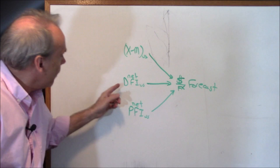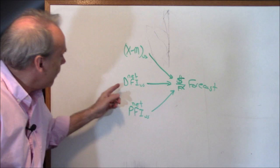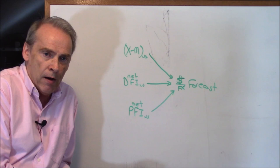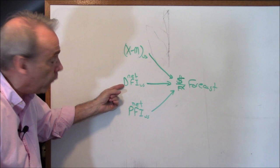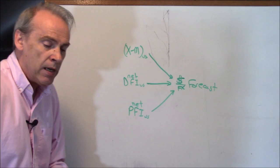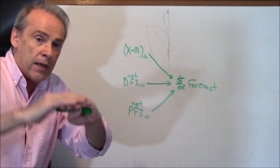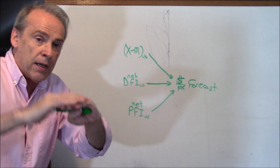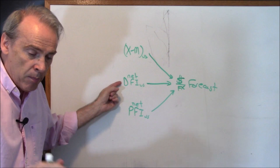Direct foreign investment is when you're not going to buy a share of an automobile company in Japan — you're going to build an automobile company in Japan. When you build a franchise in another country, that's direct foreign investment, as opposed to portfolio or indirect foreign investment. Direct foreign investment is when you're establishing another one of your franchises or something in your supply chain in another country.